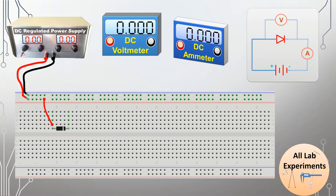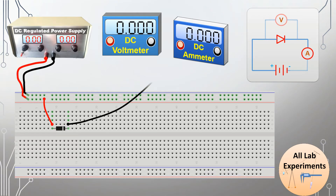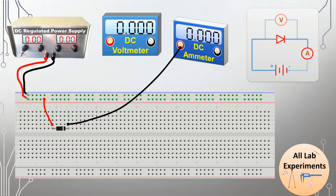After that we connect the negative of our diode to the positive of the DC ammeter. Then we close this circuit by connecting the negative of the DC ammeter to the negative of the power supply, connecting it to the negative line on the breadboard.